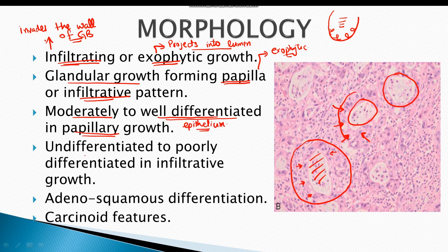In cases of infiltrative growth pattern, the tumor cells are mostly undifferentiated to poorly differentiated, meaning they do not resemble the gallbladder epithelium. These cells are mostly round, have central nuclei, and have extensive cytoplasm, resembling primitive cells.